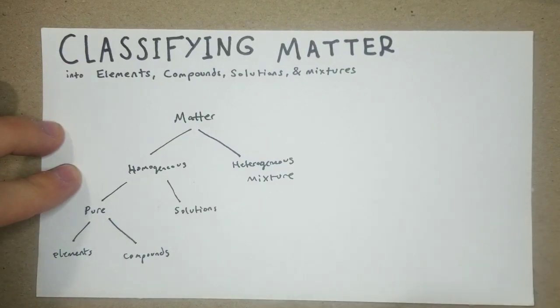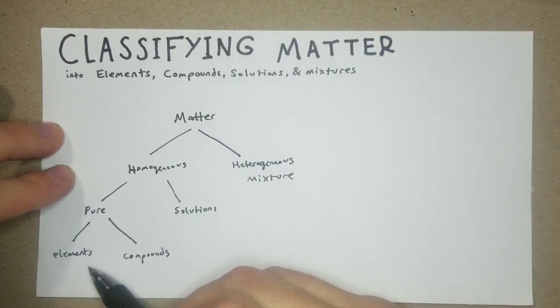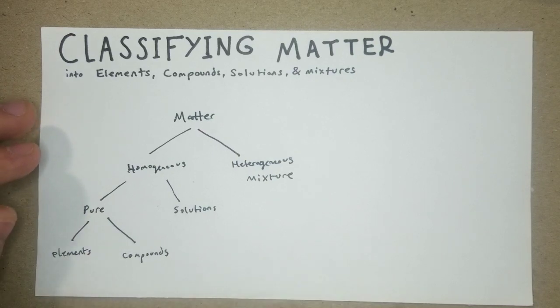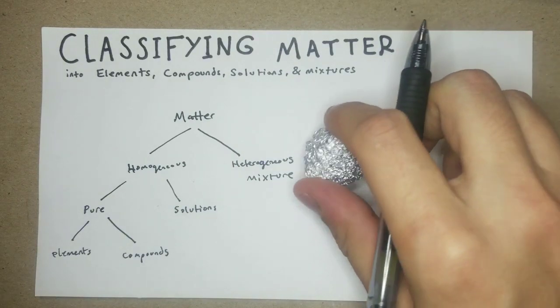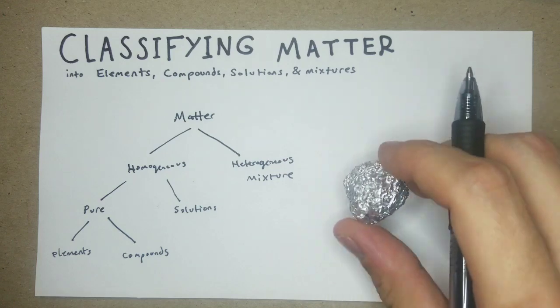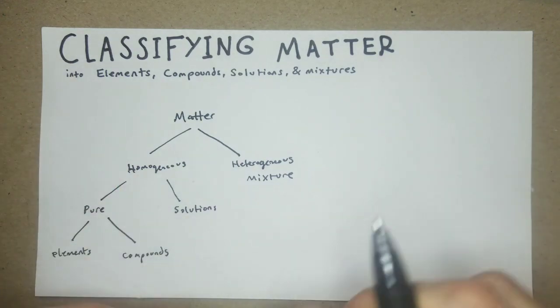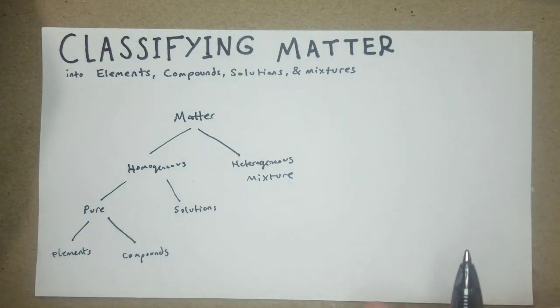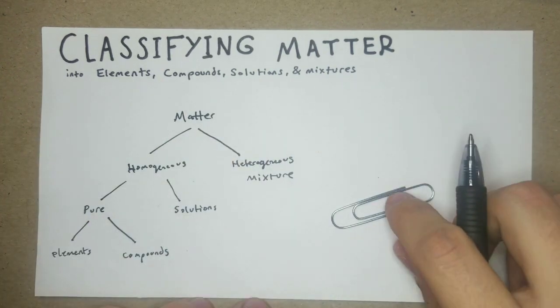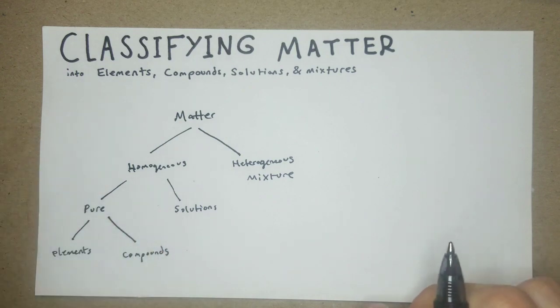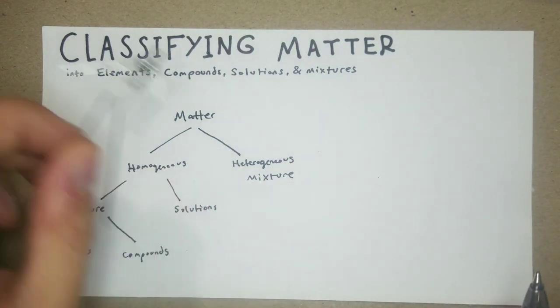For elements, basically it's all one thing, a single element. Here we have some aluminum foil, that's an example of an element, it's just aluminum made into a really thin malleable form. A paperclip, that's another example, it's just steel wire, and it's an element. No matter how you break it up it's still an element.